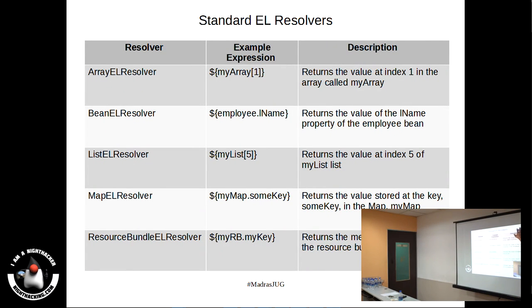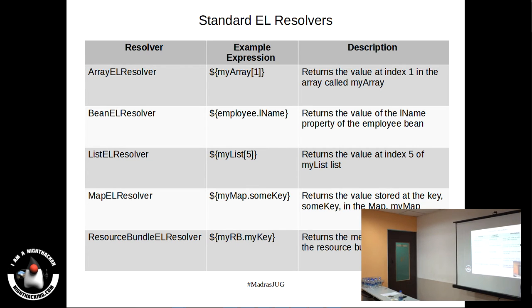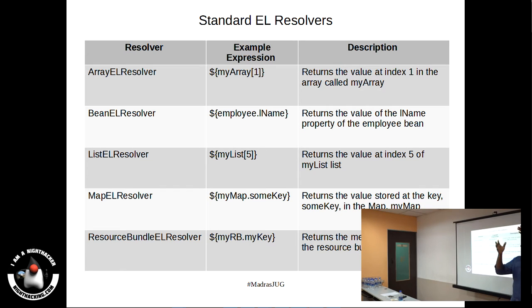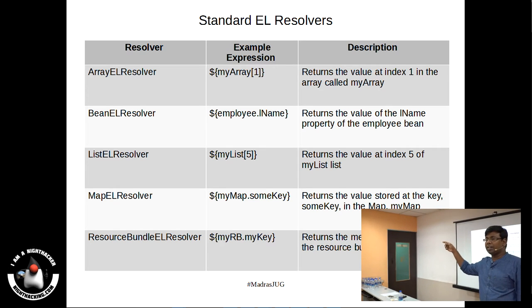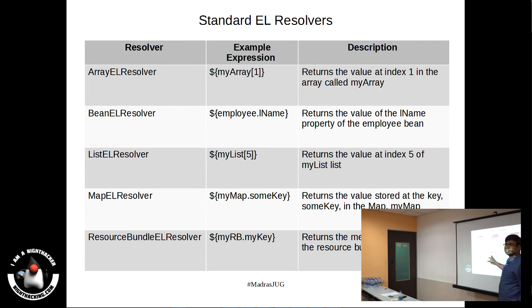These are some of the standard EL resolvers already available: array EL resolver, bean EL resolver — for example employee.lastName. You can imagine that in the composite EL resolver, if this is an instance of an array it calls the array resolver; if it is an object or bean it calls the bean resolver; if it is a list it calls the list resolver; if it is a map it calls the map resolver. This is how it is organized.